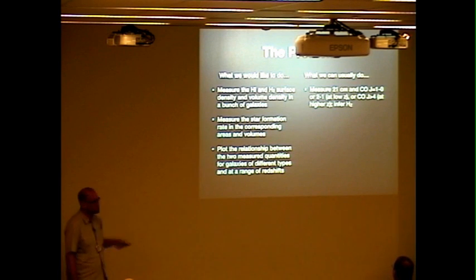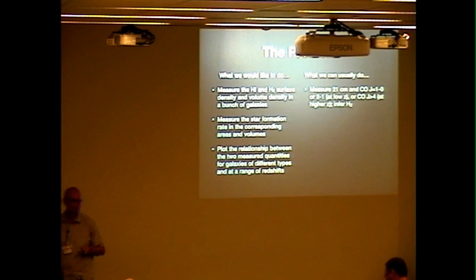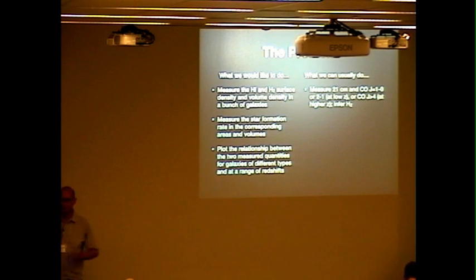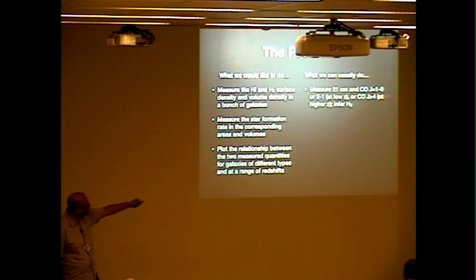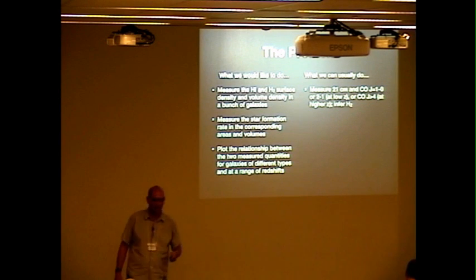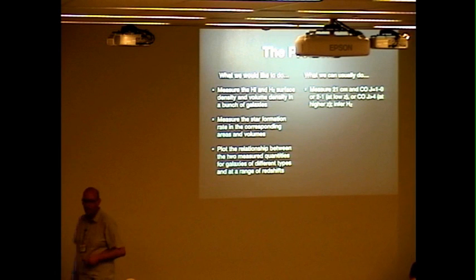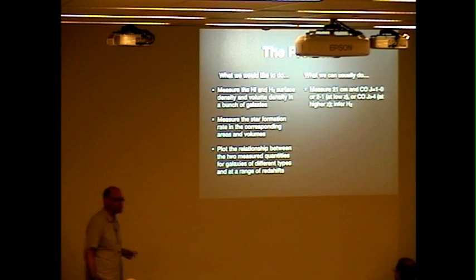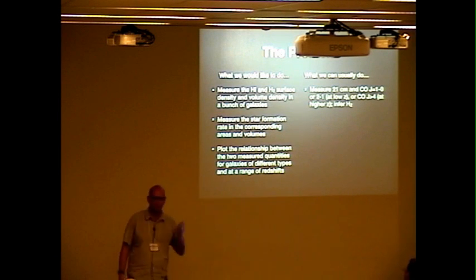We can measure a 21-centimeter line. To trace the molecular gas, you can't measure H2 directly, so you use a proxy like CO. And you can't generally get the entire CO excitation ladder. At low redshift you get J=1-0 or 2-1, whereas at high redshift you maybe get some higher J line like J=4 or higher, and you then attempt to convert that into a molecular gas mass. Of course, if you're at high redshift, you can't see the 21-centimeter line at all.